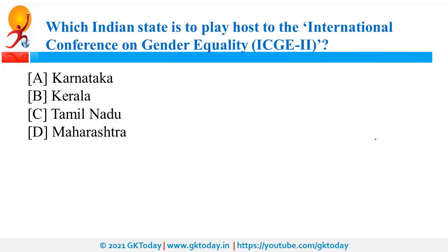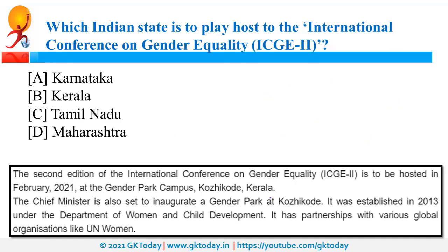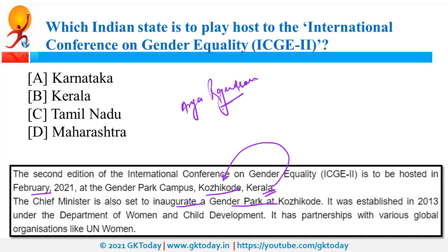Kerala is to host the International Conference on Gender Equality. Kerala was also in news as the first gender park is going to be in Kozhikode, Kerala. The International Conference on Gender Equality is scheduled for February 2021 and the Chief Minister will inaugurate the gender park at Kozhikode. Kerala was also in news because of Arya Rajendran, who became the youngest mayor of India from Thiruvananthapuram. Kerala was also the first state to fix MSP for vegetables.